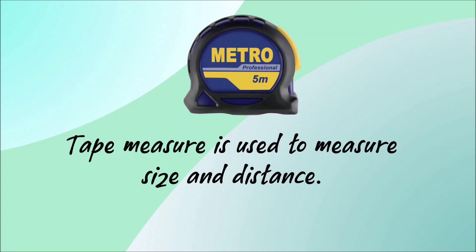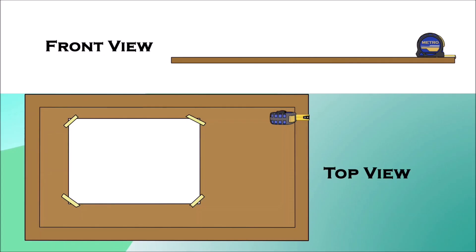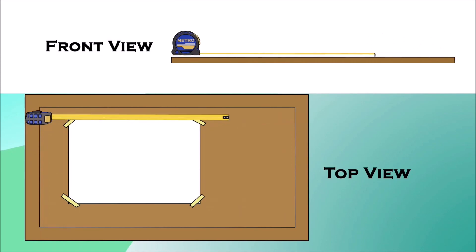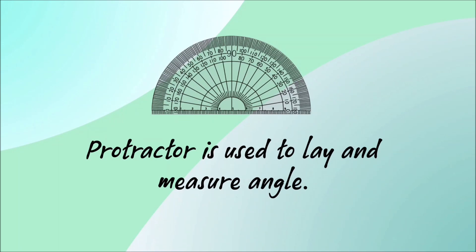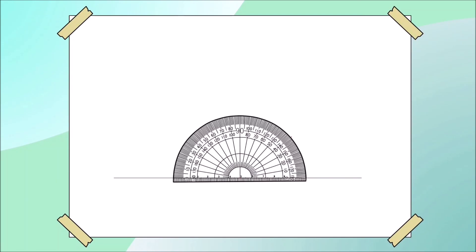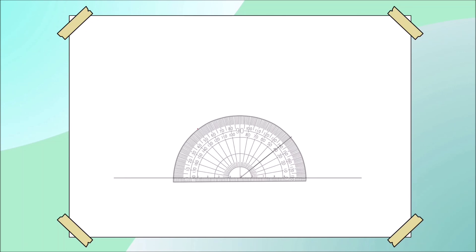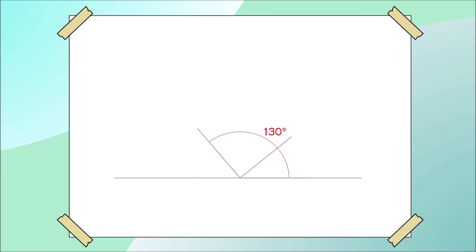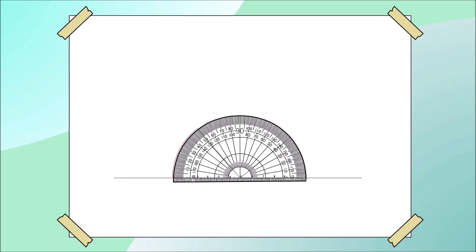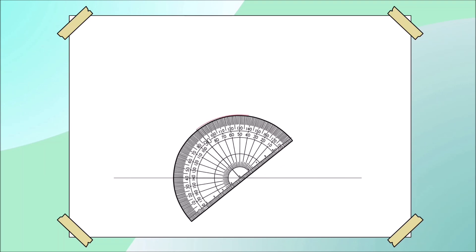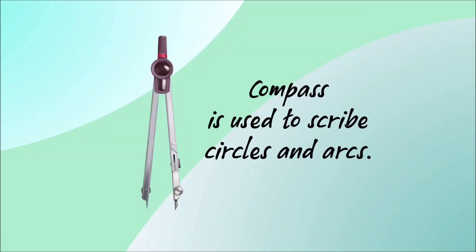Tape measure is used to measure size and distance. Protractor is used to lay and measure angle. Compass is used to describe circles and arcs.